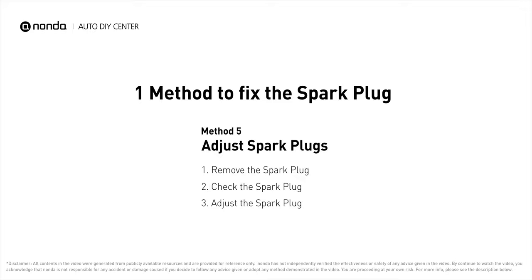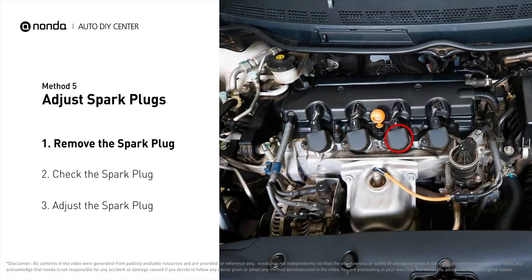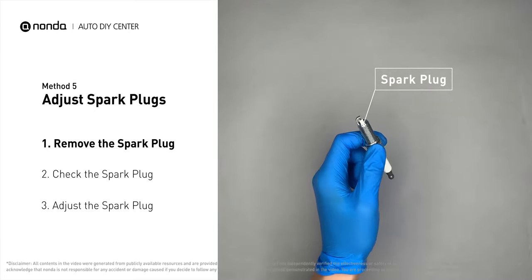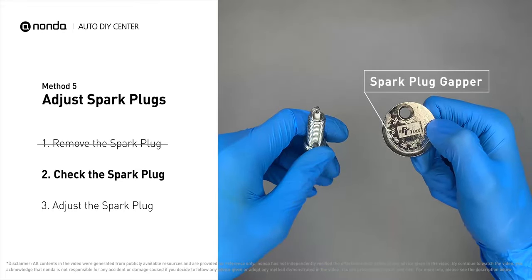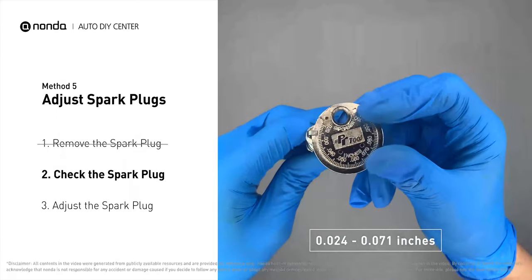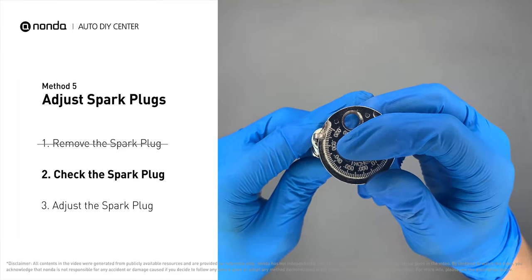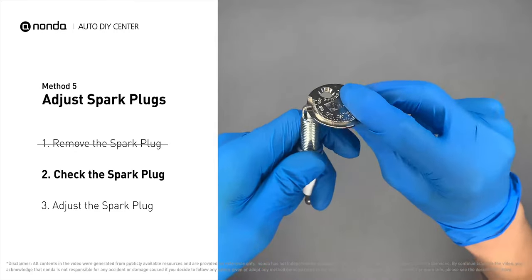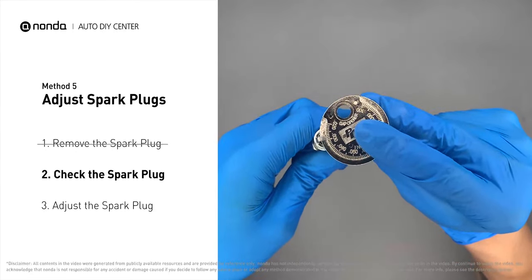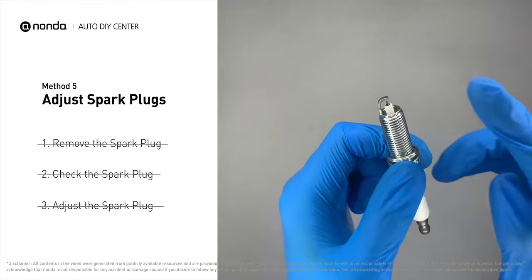Here is one method to fix the spark plug. Method 5: Adjust Spark Plugs. The spark plugs are located at the engine end of the wires under the plug covers. First, carefully remove the spark plug. Use a spark plug gapper to check the spacing — normally it should be between 0.024 to 0.071 inches. If the spacing is too low, use the spark plug gapper to increase it back to the normal range. If there is obvious damage on the spark plug, simply replace it with a new one.